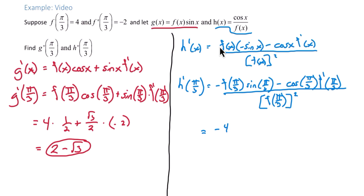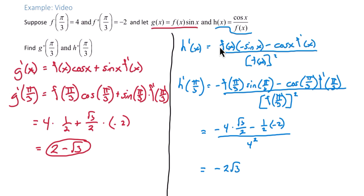Sine of π/3, from the unit circle, is √3/2. Then minus cosine of π/3, which is 1/2, times f prime of π/3, which is given as negative 2. All over f of π/3 squared, which is 4 squared equals 16. Simplifying, we get negative 2√3 plus 1, over 16. And this is h prime of π/3.